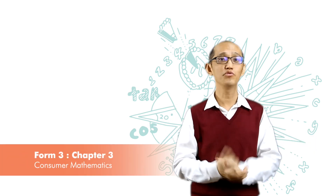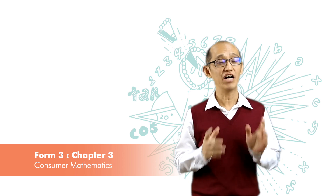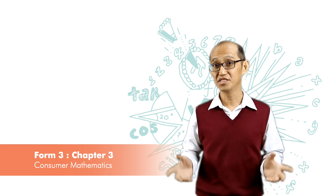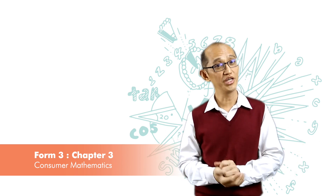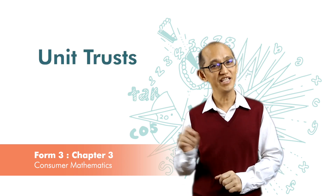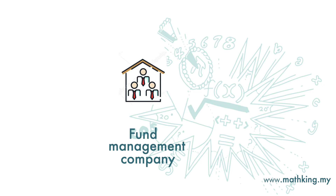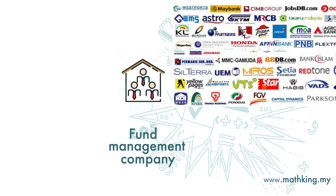There are many shares issued by many different companies in the market. If you want to invest but have limited funds, which means you cannot buy shares in too many companies, or maybe you don't even know which companies to buy, then you have the choice of buying units from unit trusts. This is how unit trusts operate: a group of professionals in a fund management company will do the analysis and select the shares of companies to buy from the market.